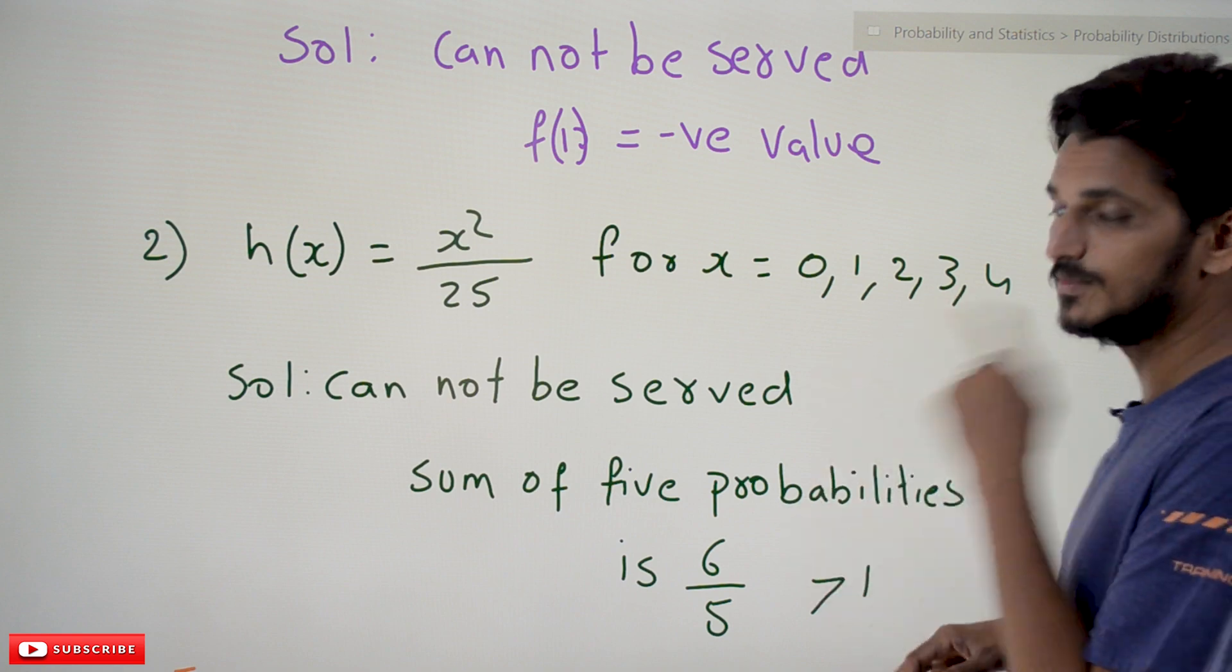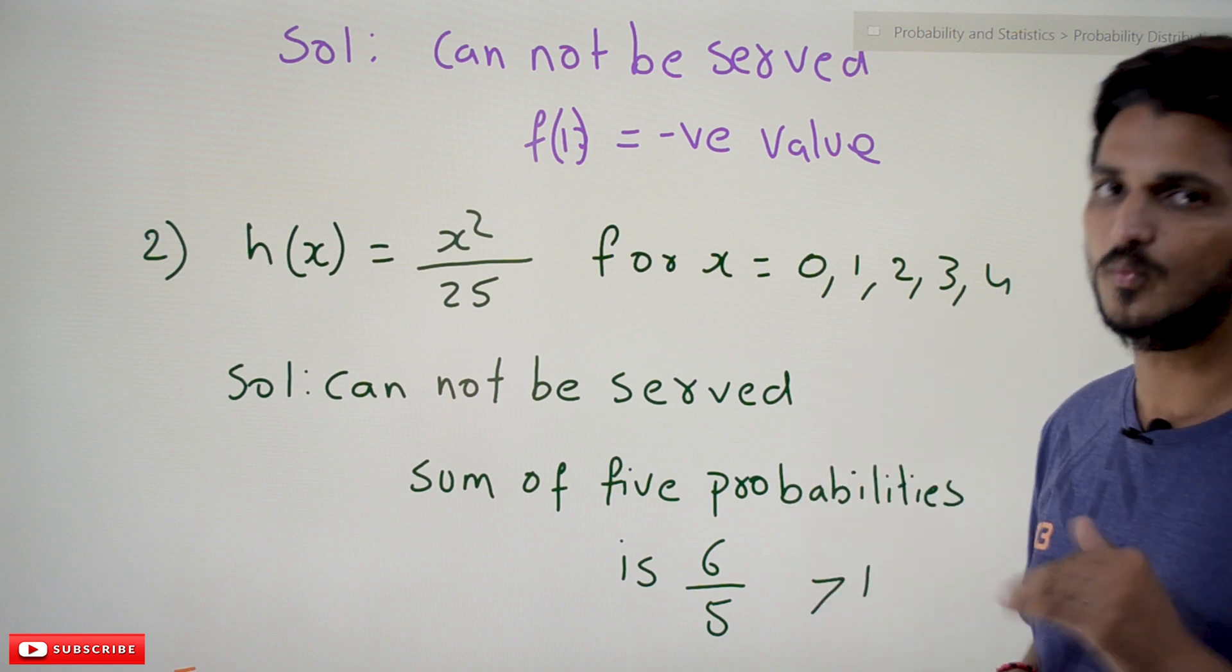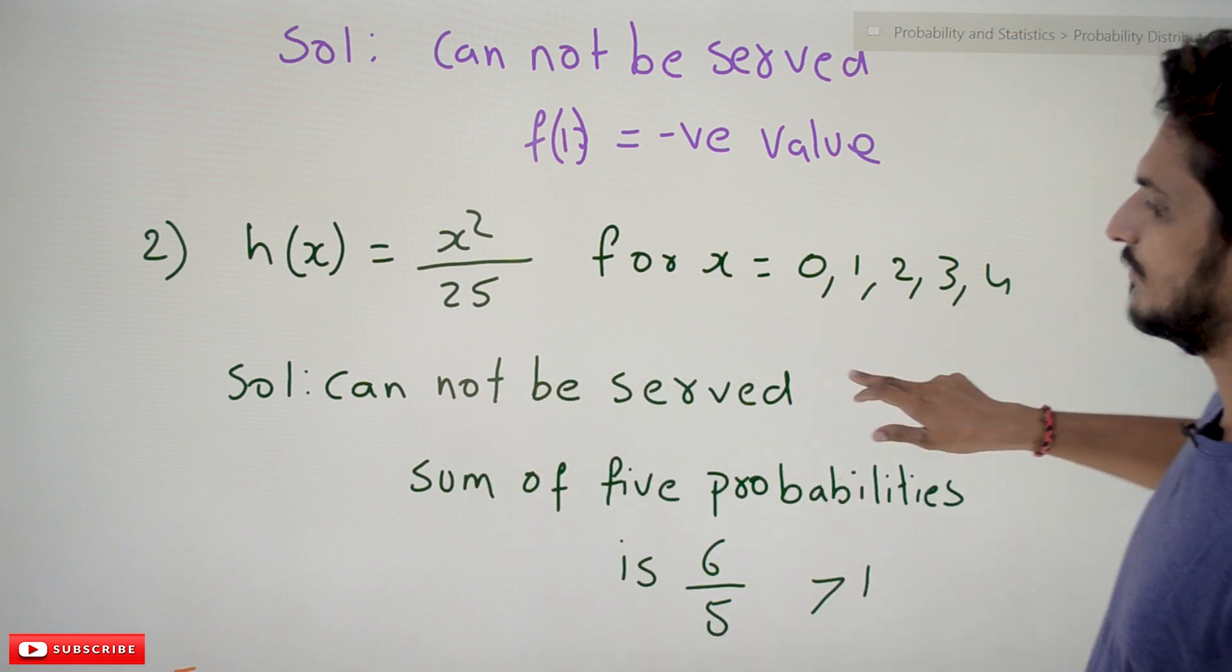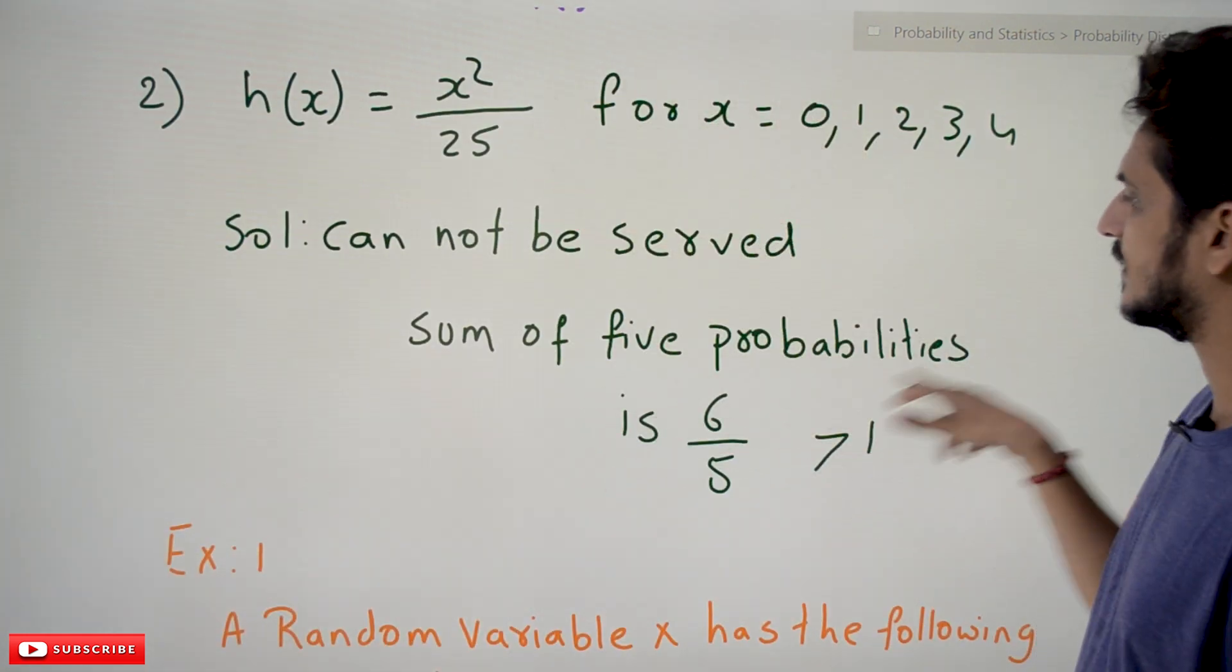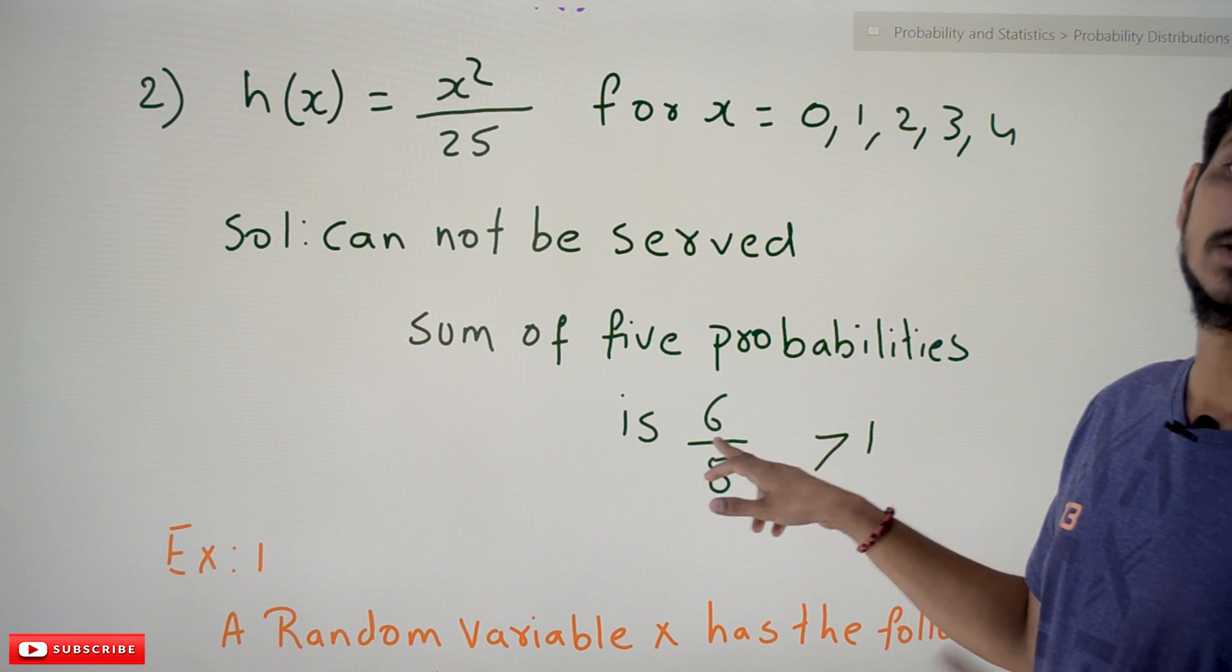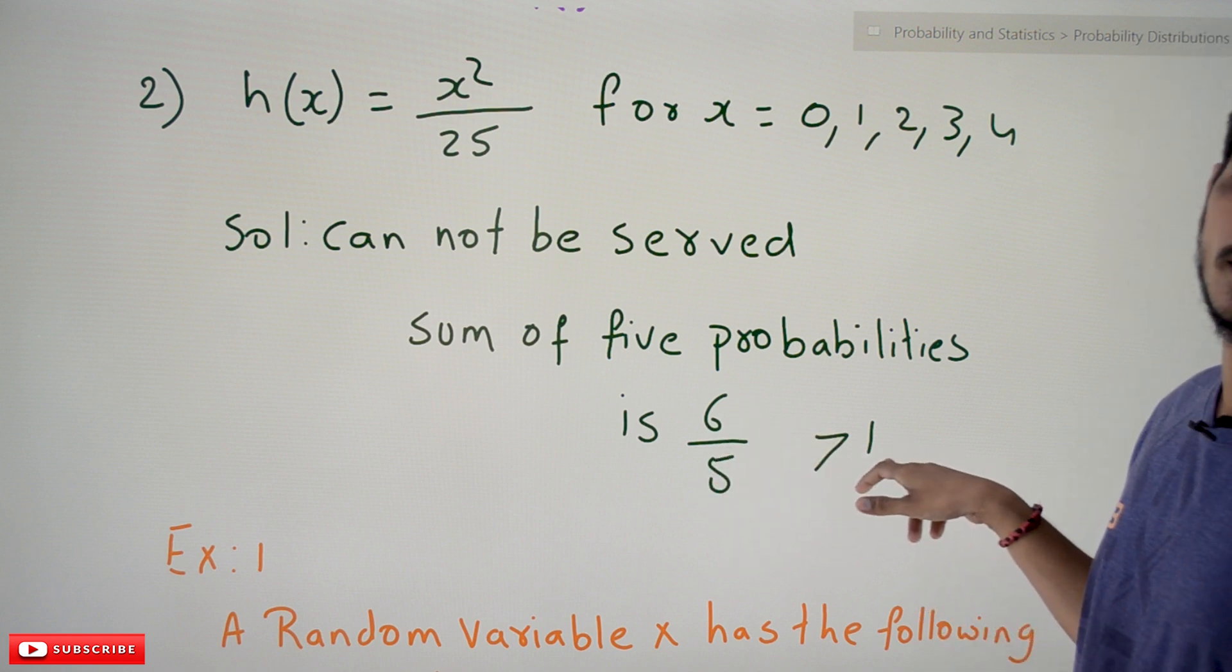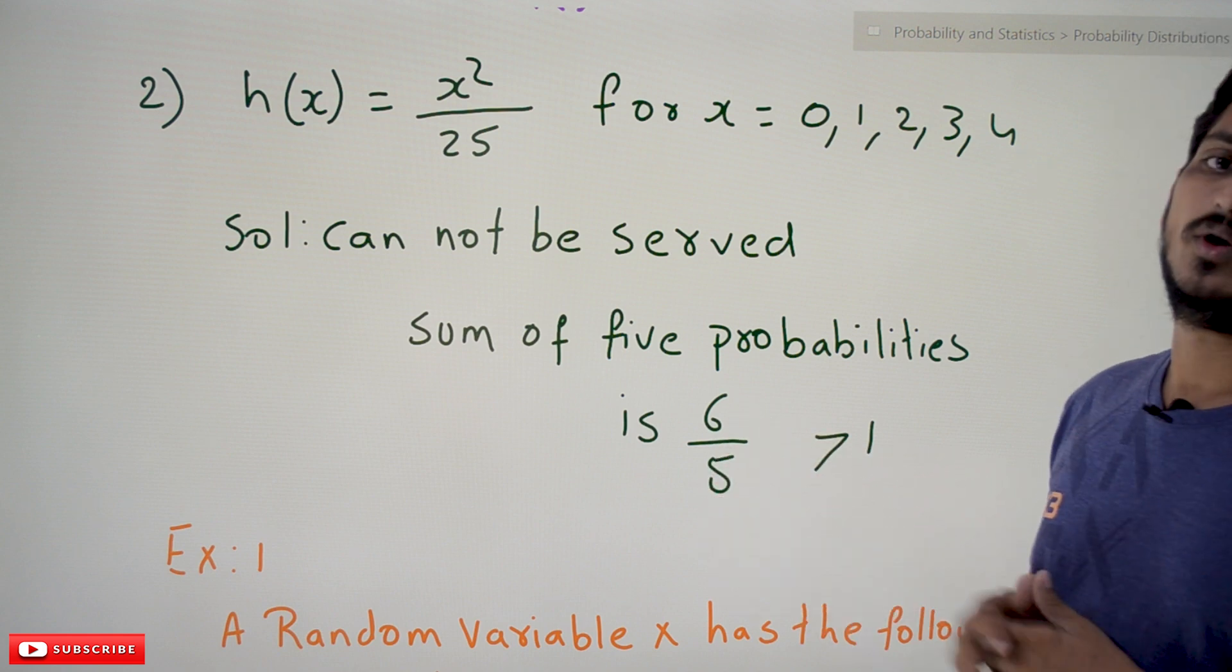No, we cannot serve it as a probability mass function. Why? Because sum of 5 probability values, if you substitute them or if you add them all, we'll get a value of 6/5, which is greater than 1. It should be equal to 1.